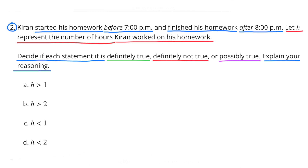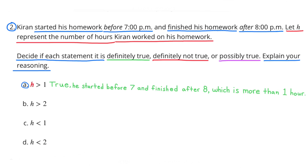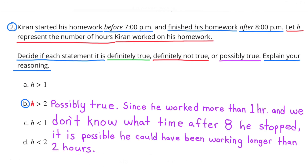Problem 2. Kieran started his homework before 7 o'clock p.m. and finished his homework after 8 o'clock p.m. Let H represent the number of hours Kieran worked on his homework. Decide if each statement is definitely true, definitely not true, or possibly true, and explain your reasoning. A. H is greater than 1 — that would be definitely true because he started before 7 p.m. and finished after 8 p.m., meaning he worked longer than 2 hours.